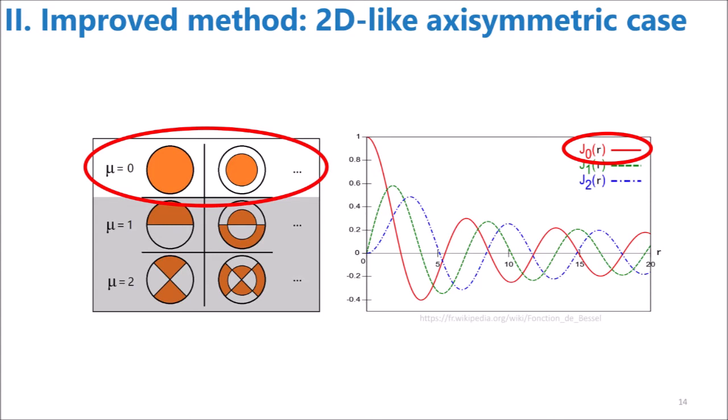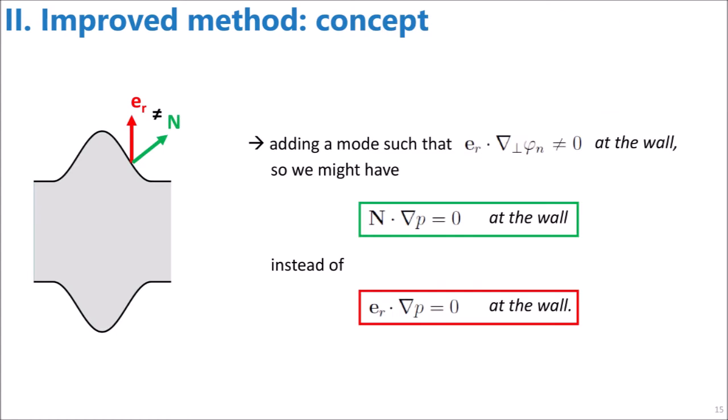As we said in the previous section, using the standard basis yields a pressure gradient at the border that is necessarily normal to the wrong direction. The core idea of the improved method is quite simple. It relies on adding a transverse function with another boundary condition, so a combination of transverse functions can possibly satisfy the exact boundary condition.